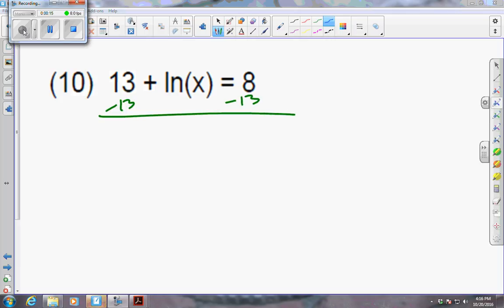We end up with natural log x equals negative 5, and you've got two ways of thinking about this. One way is simply to convert that to an exponential: we've got a base of e to the power of negative 5 equals x, and we can solve.